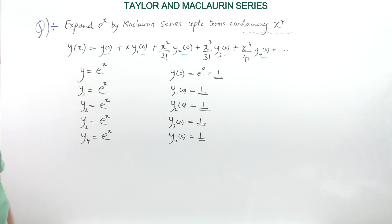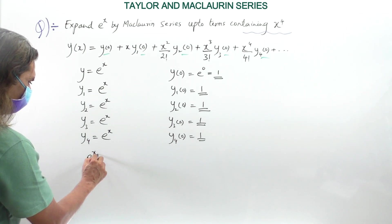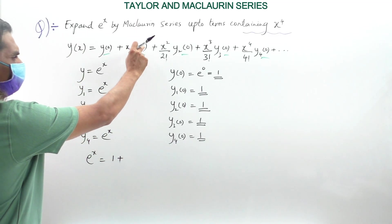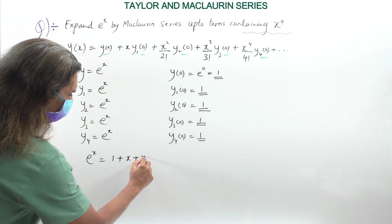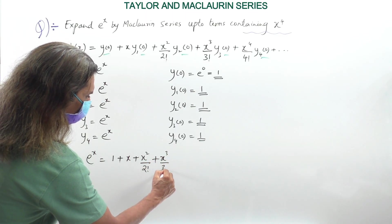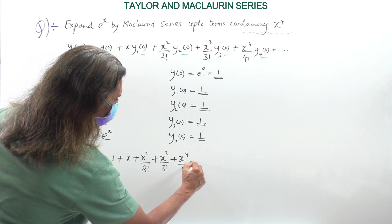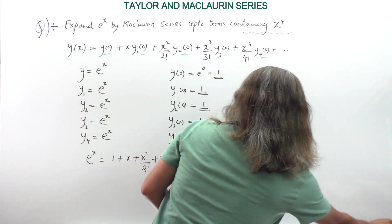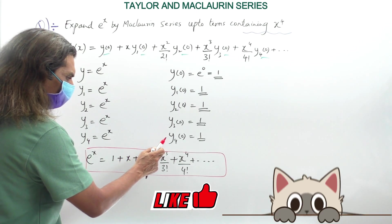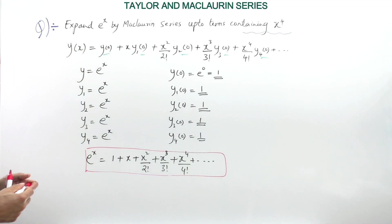Now we form the series. The Maclaurin expansion of e^x is: e^x = 1 + x·1 + x²/2!·1 + x³/3!·1 + x⁴/4!·1, which gives e^x = 1 + x + x²/2! + x³/3! + x⁴/4! + ... This is the series expansion for y = e^x. I hope you understood how to solve this — it is a very simple question.